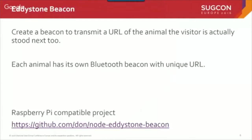The idea here is we're going to create beacons to start transmitting the URL of the animal the visitor is standing next to as they walk around our zoo. We're going to have a beacon next to each individual animal which will transmit its own unique URL. When looking at how to achieve this, I came across a great platform — somebody has basically ported the Eddystone beacon to Node.js, and Node.js is capable of running on a Raspberry Pi, so it allows us to do beacons that way.